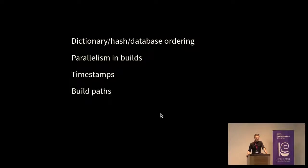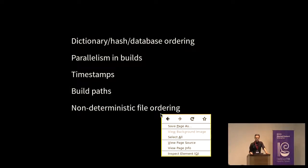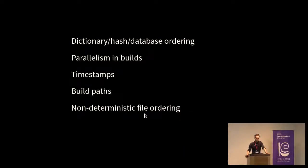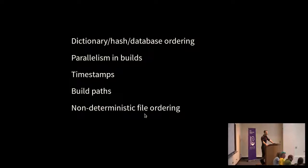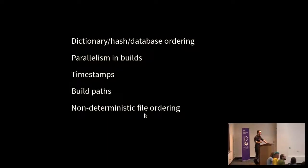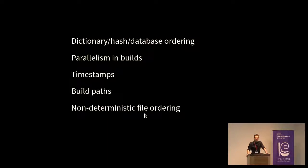Timestamps are perhaps our biggest problem where you end up with people loving to include the current date in the build, for example. This was built on this date and time. But it means that if you build it twice, or I build it and you build it, we're going to get different results because we're going to build it at different times. Build paths. You might build it in home whoever, and I'll build it in home lamby. If this gets encoded into the binaries, then you're going to end up with an unreproducible binary. Non-deterministic file ordering is also another issue. On Unix, when you do a readdir system call, the order in which the files are returned are not defined to be in alphabetical order.